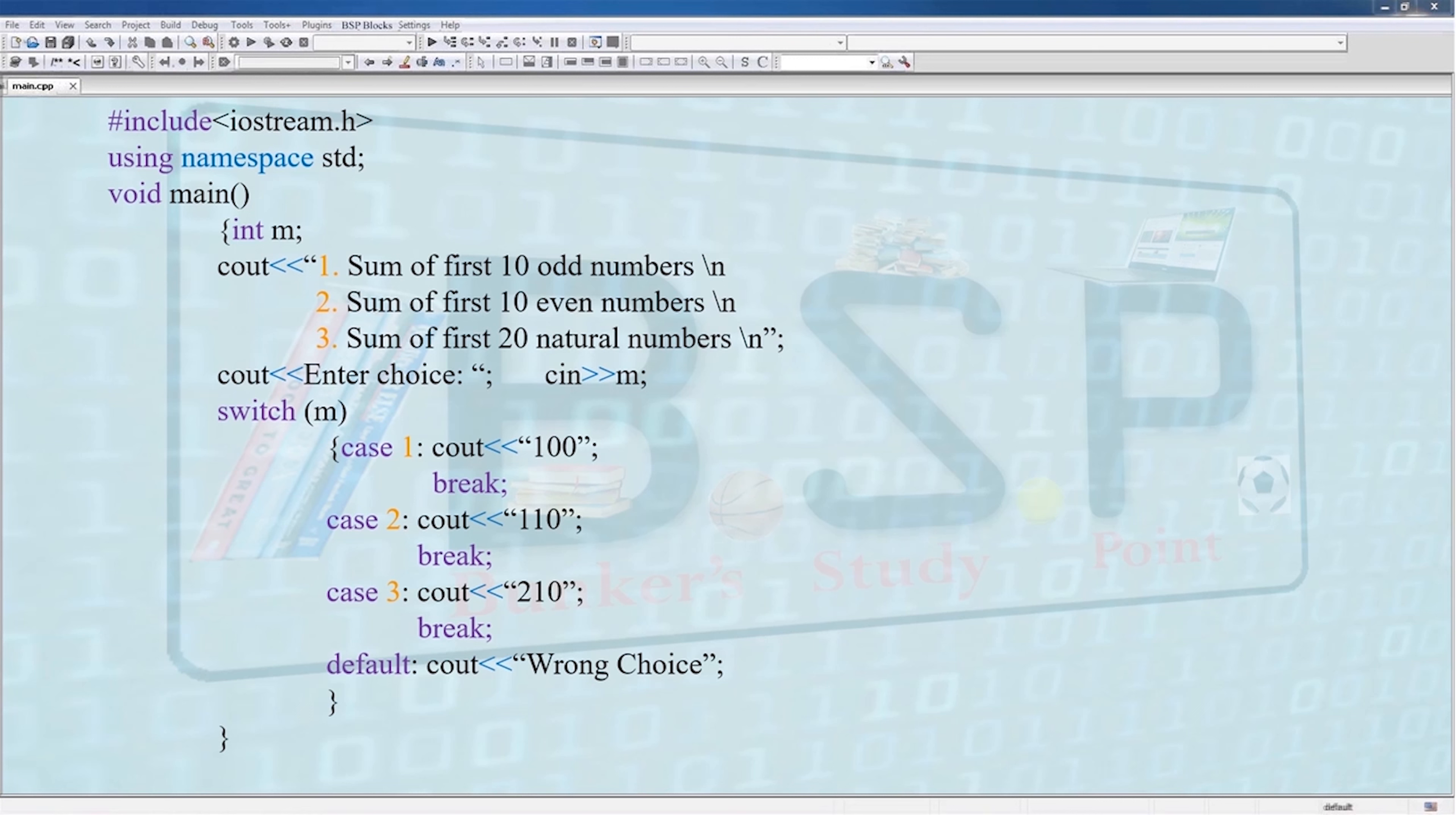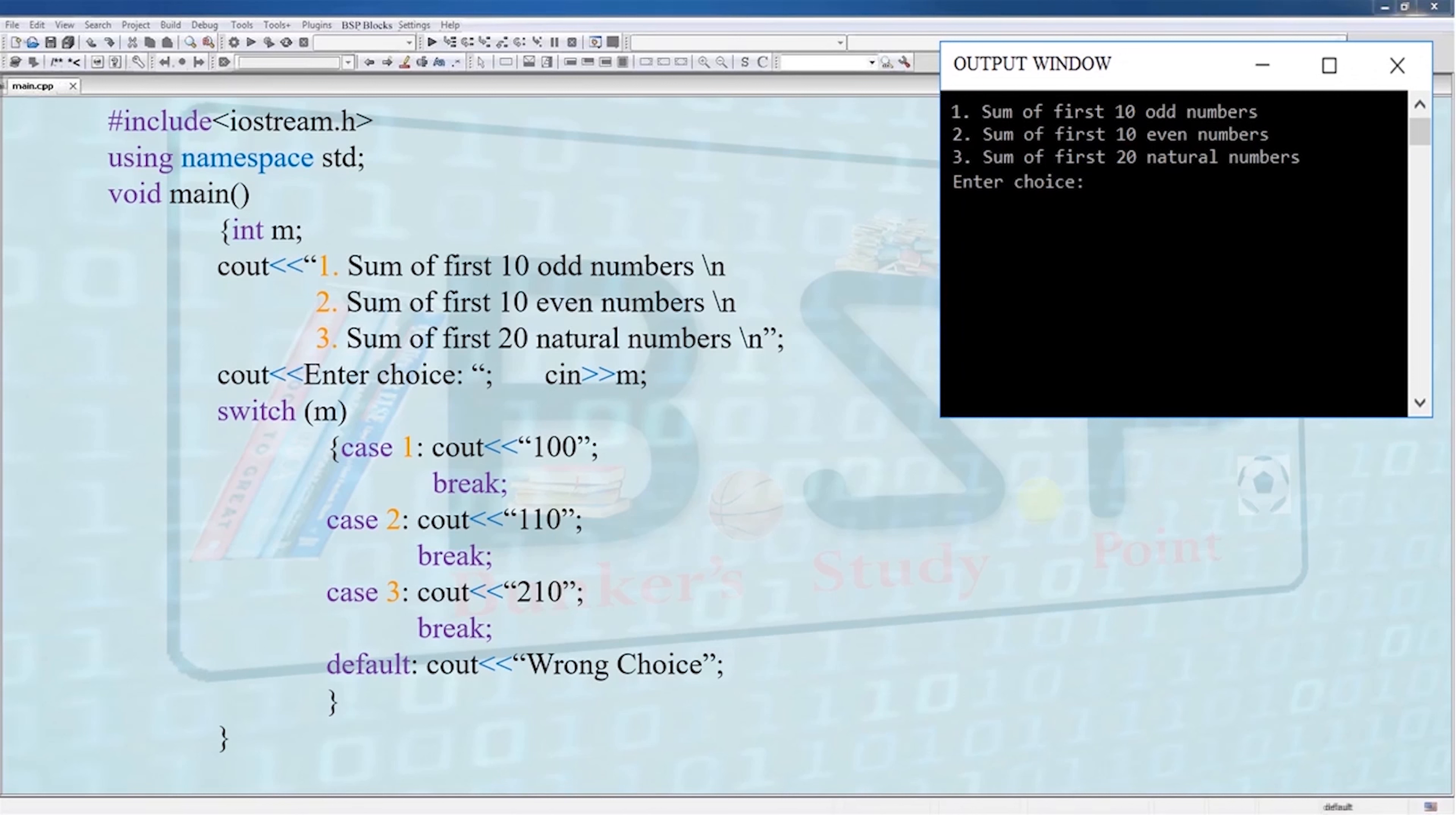In the default clause or default case we have a cout wrong choice. Whenever the user accidentally enters anything other than 1, 2, and 3, default will be executed. Let's run this program one time. Suppose I enter choice 2, then the program outputs 110.